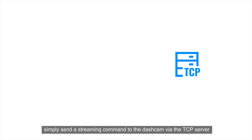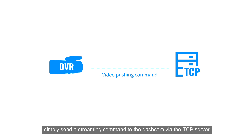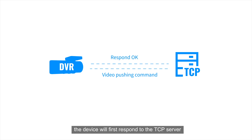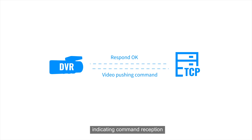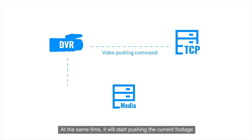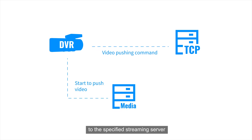To view the live video stream, simply send a streaming command to the dashcam via the TCP server. Upon receiving the command, the device will first respond to the TCP server, indicating command reception. At the same time, it will start pushing the current footage to the specific streaming server.